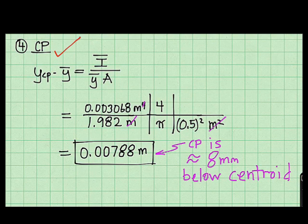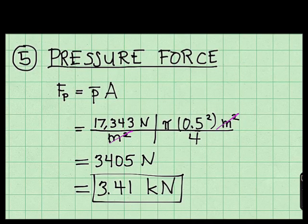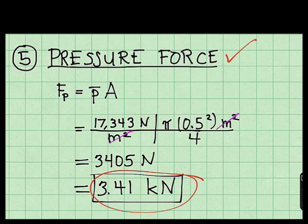The area of moment value is right here. Center of pressure. Here's the formula. Here's the final value. And we can note that the center of pressure is about eight millimeters below the centroid. The pressure force is 3.41 kN.